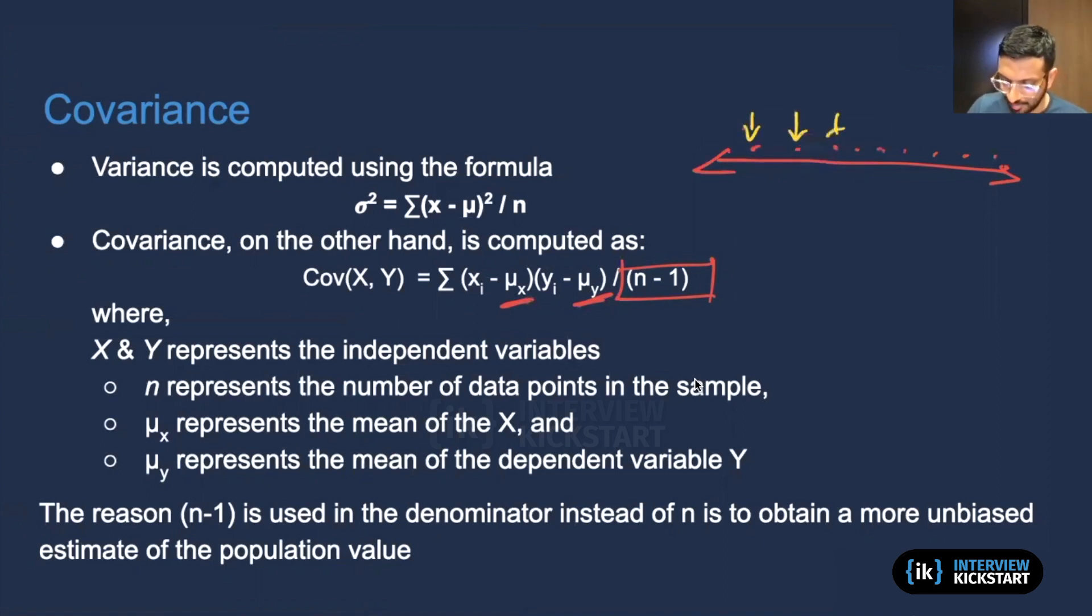The second time, maybe we would sample this, this, and this, and we would get another value of the mean. So overall, the mean that you get if you do this enough times will be a good estimate of your population.